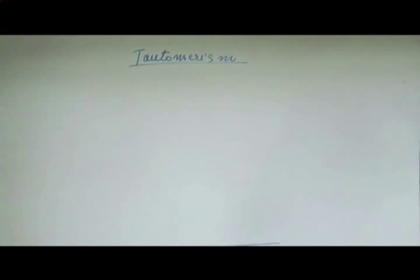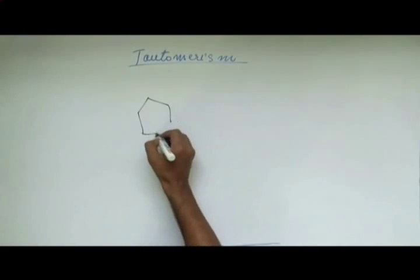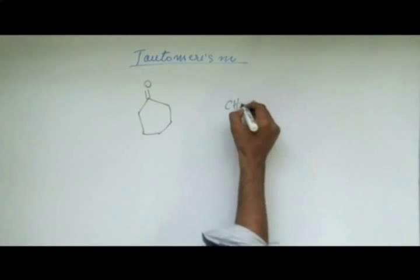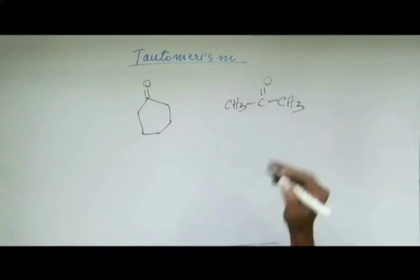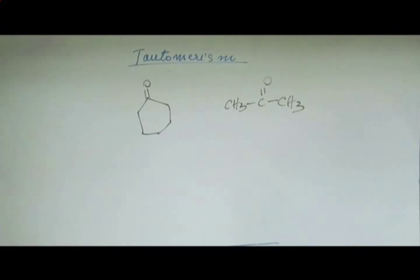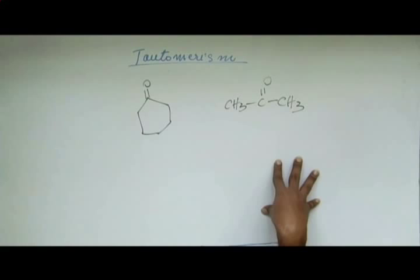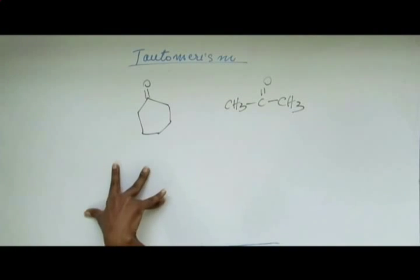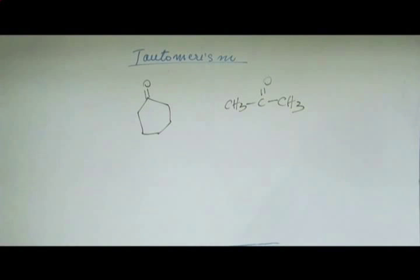Now we are moving ahead to identify compounds where keto will be dominant and where enol will be dominant. Suppose I have cyclohexanone and I have acetone, and someone asks me to compare the enolic content of these two compounds — which will have a greater percentage of enol? To practice drawing enol from keto, you must draw the enol of acetone and the enol of cyclohexanone by hand, and then compare stability based on the three factors we have seen.